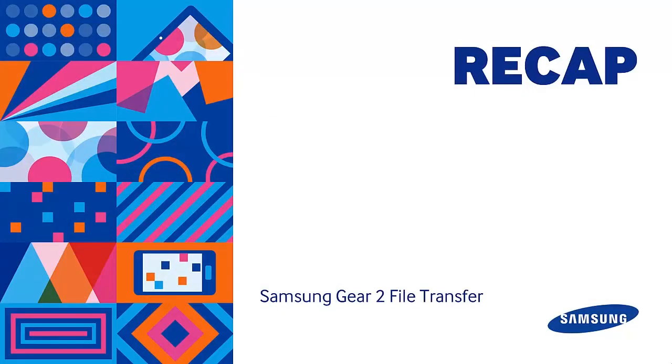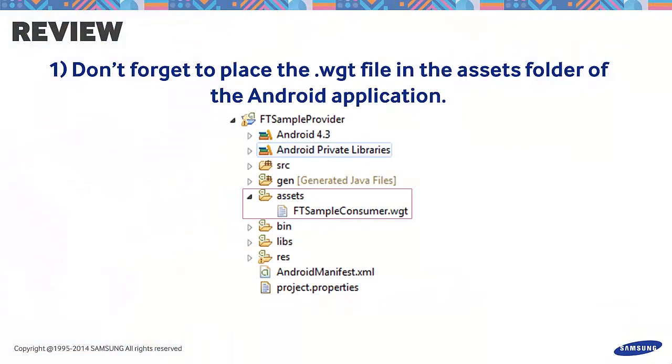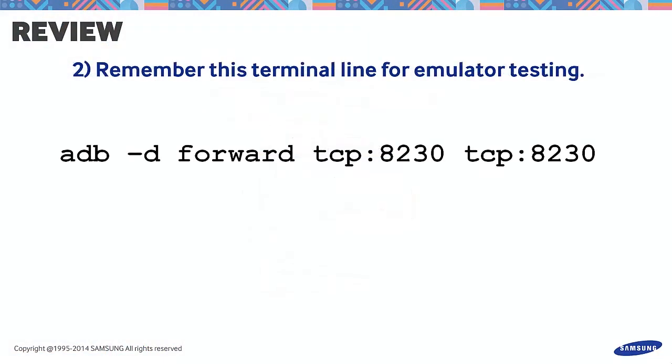Let's have a review of the things we learned. Don't forget to place the .wgt file in the assets folder of the Android application. Remember this line for emulator testing. We hope this tutorial helped. For inquiries, please post your questions on the official forum at developer.samsung.com. Stay tuned for our next video. Thanks for watching.